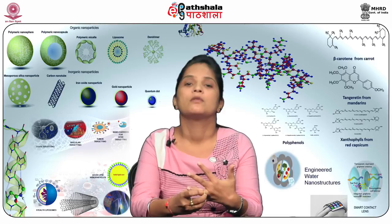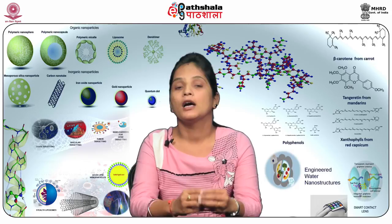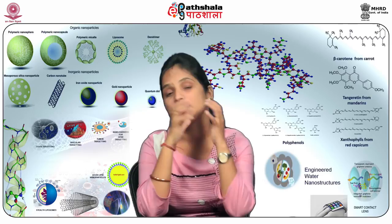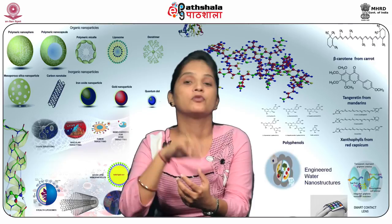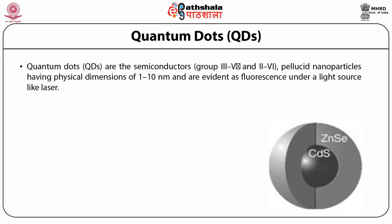Quantum dots have been mostly investigated for the treatment of cancer because they give us the opportunity to simultaneously image the disease as well as treat the disease. In recent years, quantum dots were introduced to cell biology as an alternative fluorescent probe because of their fluorescence properties. They are basically made up of elements belonging to the semiconductor groups — group 3 and 5, and group 2 and 4.